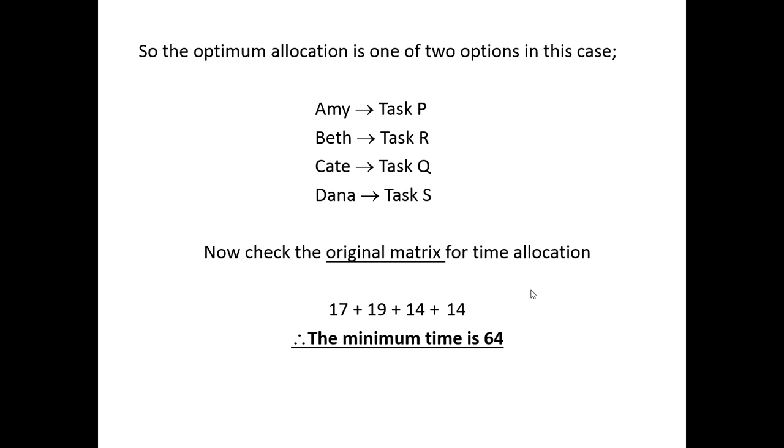I hope this has clarified the Hungarian algorithm and that you will view this a couple of times to clarify it in your own mind. The process involves a row reduction, checking the allocation. If unsuccessful, a column reduction, checking the allocation. If still unsuccessful, a Hungarian algorithm and checking the allocation. Once we have an allocation, we progress to the job allocation of a bipartite, whereby each person and each task is listed, and we go through looking for the zeros and joining them together to find out which person will in fact be allocated which job.